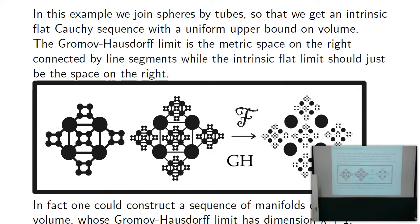You can set up a sequence of manifolds of bounded volume whose Gromov-Hausdorff limit has dimension one higher. For example, take the lattice of a cube with a thin tubular neighborhood around it — that's a two-dimensional manifold. Scale down to eight cubes with even smaller tubular neighborhoods, then 16 cubes, and so on. They're all two-dimensional Riemannian manifolds. The Gromov-Hausdorff limit is three-dimensional with a taxicab metric, with distance falling as if going through the tubes.